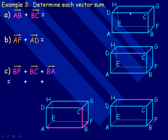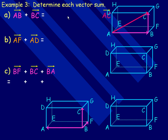In example three, we're given a three-dimensional rectangular prism and asked to determine each vector sum. In part a, we find vector AB plus vector BC. AB is this vector here, and BC is that vector there. Notice those two vectors are placed head to tail — the head of the first vector is where the tail of the second begins. So the sum vector goes from point A to point C, giving us vector AC. Notice that the second letter of the first vector matches the first letter of the next vector, confirming they're head to tail.